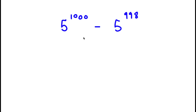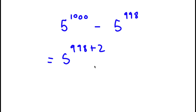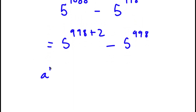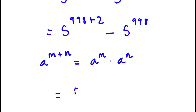In this problem, I have 5 to the power of 1,000 minus 5 to the power of 998. To solve this, I'm going to first change 1,000 to 998 + 2, because 1,000 = 998 + 2. So I have 5 to the power of (998 + 2) minus 5 to the power of 998. Using the rule that a^(m+n) = a^m × a^n, I get 5^998 × 5² minus 5^998.